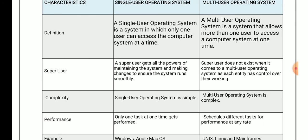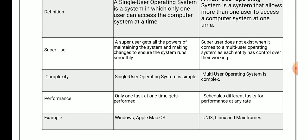For examples: in the case of single user operating systems, we have Windows, Apple, and Mac operating systems. In the case of multi-user operating systems, we have Unix, Linux, and mainframe systems.